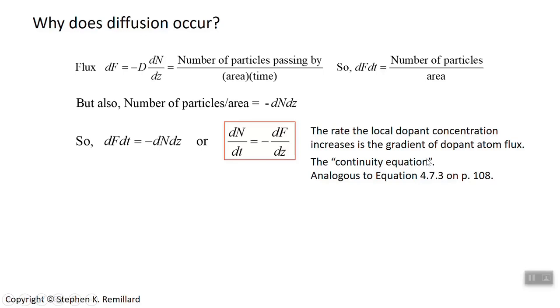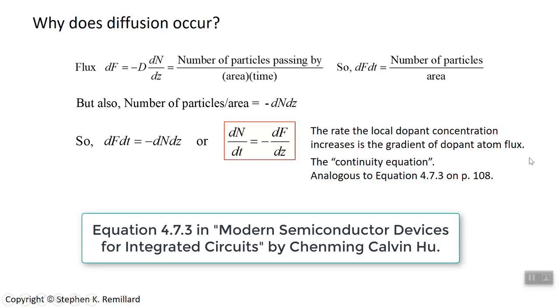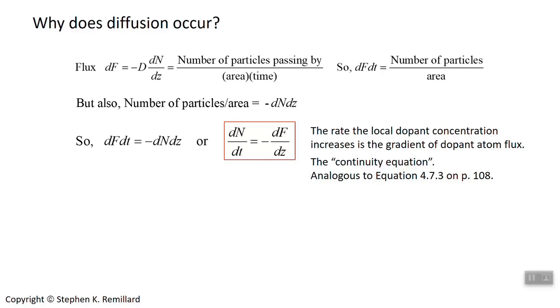And if you do study equation 473 and compare it to this, I think you'll start to see the similarity. And so I encourage you to open your book up to page 108, where we discuss this in a totally different context. And you'll see the similarity. It's the same principle. To put it in words, just at that equation, dn by dt is minus df by dz. There it is. The rate that the local dopant concentration is increasing equals the gradient of dopant atom flux.